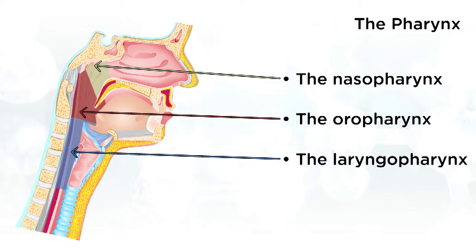The nasopharynx is the superior portion of the pharynx. The oropharynx is located between the soft palate and the base of the tongue. And the laryngopharynx extends until the entrances of the larynx and esophagus.